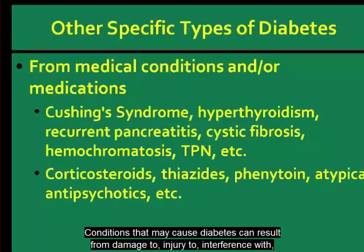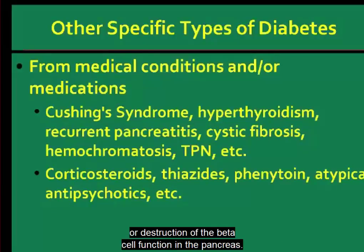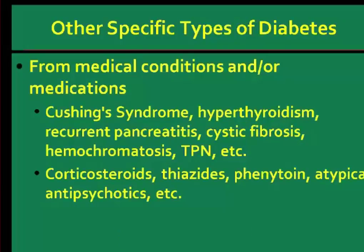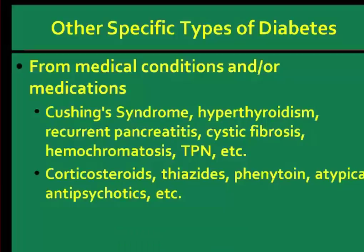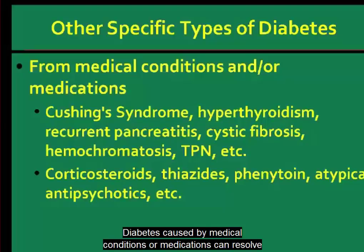Conditions that may cause diabetes can result from damage to, injury to, interference with, or destruction of the beta cell function in the pancreas. Examples include Cushing's syndrome. There are also medications that can induce diabetes in some people, including corticosteroids. Diabetes caused by medical conditions or medications can resolve when the underlying condition is treated or the medication is discontinued.